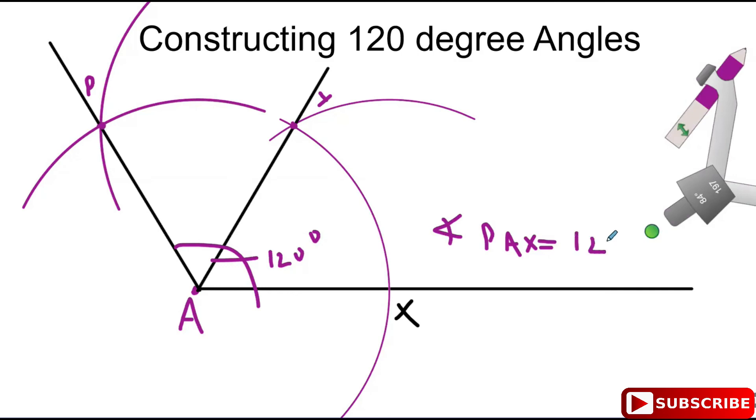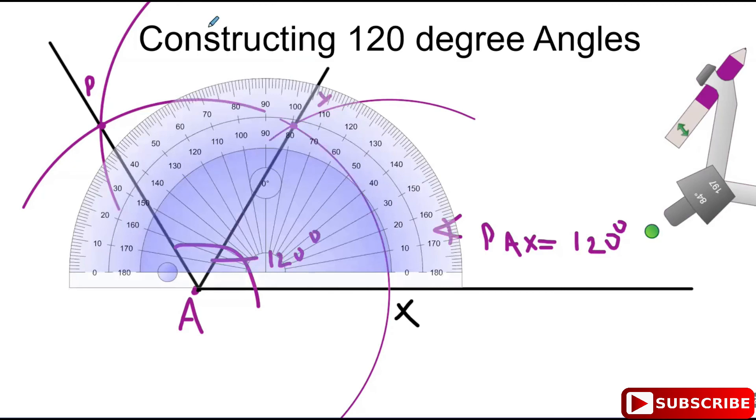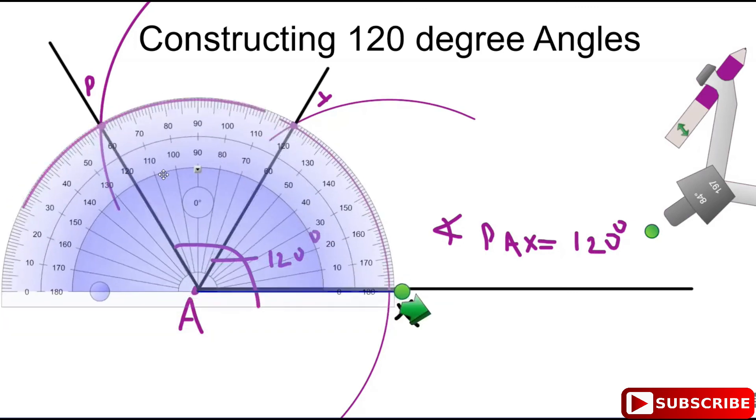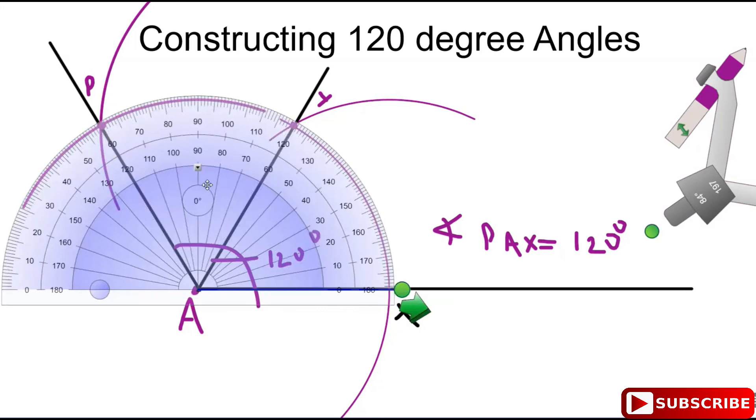If you don't believe it's 120 degrees, don't take my word for it. Use your protractor, move it down to A, and measure the angle. Look right there—exactly 120 degrees. That's how you construct a 120-degree angle.